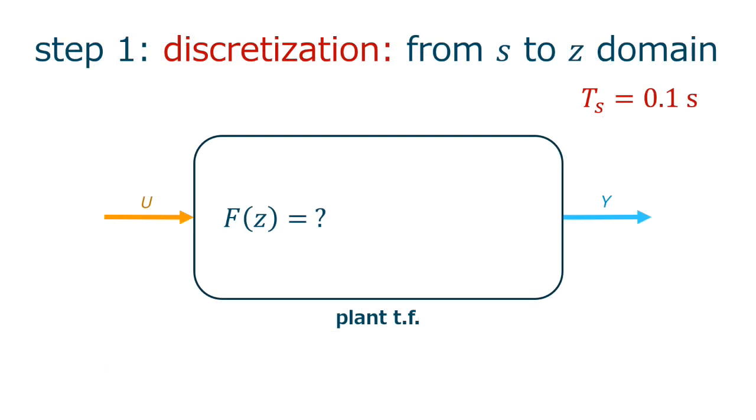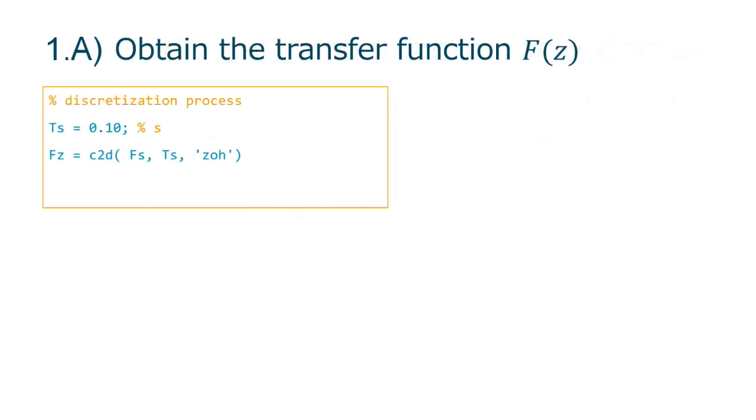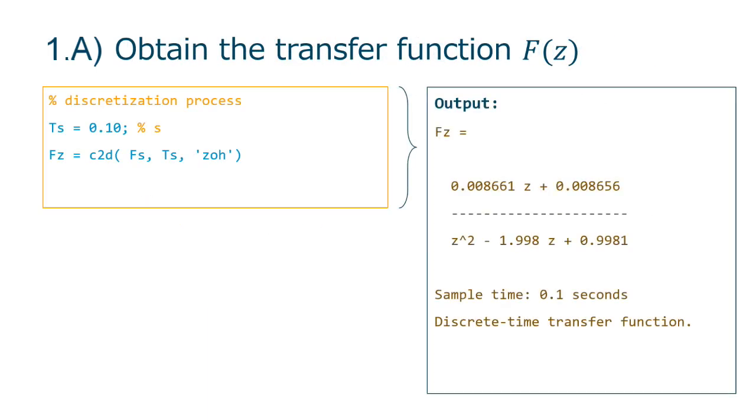The next step is, of course, going to the discrete time domain. The sampling period was already set at 0.1 seconds, or 10 samples per second. And the discretization process is exactly the same as seen in previous Lab 01. The difference now is that we want to analyze Fs from the frequency response perspective.